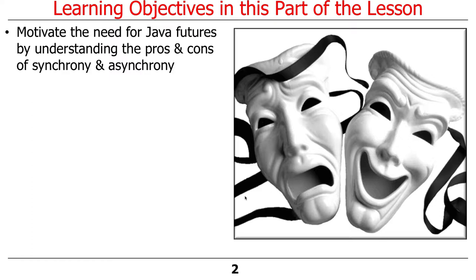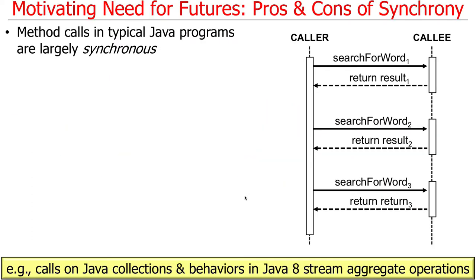We'll talk about the pros and cons of synchrony and asynchrony. As we've talked about many times, and as you should have experience from earlier work, earlier classes, and earlier projects, method calls in classic Java programs are largely synchronous. Examples would be making method calls on Java collections, the behaviors in a Java 8 stream, be it parallel or sequential. Those are all examples of things that are synchronous.